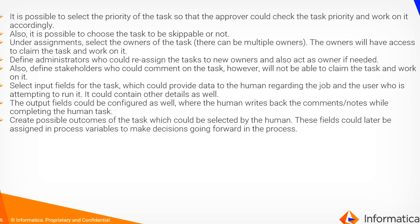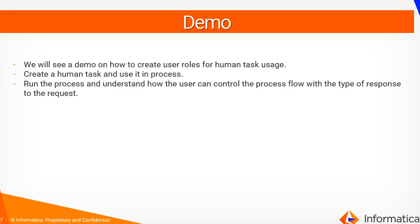We can also select input fields, outcomes, and output fields of the task. Now let's proceed with the demo. In the demo we will be checking how to create user roles for the human task usage. We will create a human task and use it inside a process. We will run and understand how the approver takes control and acts upon the request.